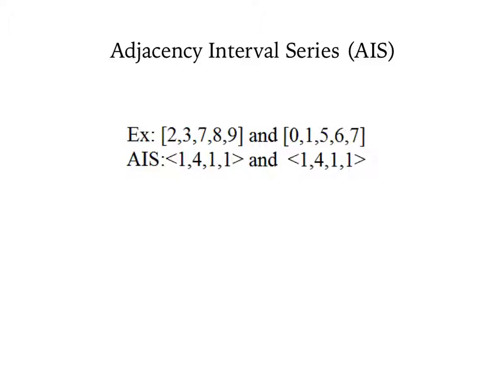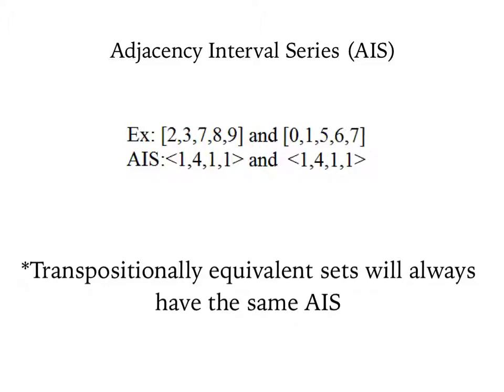Observe that the AIS for both sets is exactly the same. Therefore, in transpositionally equivalent sets, the AIS will always be the same. This is a good way to check your work when finding transpositional equivalents.